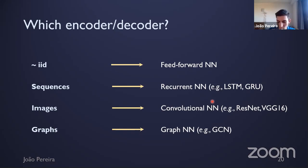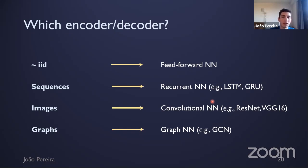The type of neural network used to parameterize the encoder and decoder depends on the data and application. For data points without strong dependencies, a feedforward neural network works well. For time series or text, a recurrent neural network can capture temporal dependencies. For images, a convolutional neural network is appropriate. For graph-structured data like transaction or social networks, graph convolutional networks can be used. This flexibility is one of the key strengths of the variational autoencoder framework.